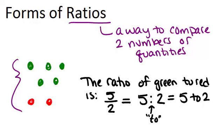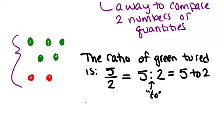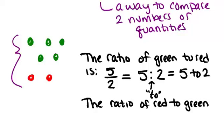Now if we changed it around and talked about instead the ratio of red to green then everything would flip and the two and the five would switch places. So you have to pay attention to the way you are wording what you're talking about if you're talking about red to green or green to red and make sure you start with the right number. So if you're talking about red to green then your ratio would be two over five or two to five or two to five.